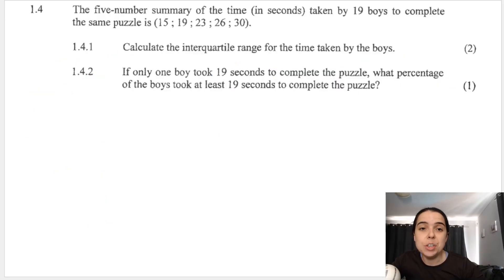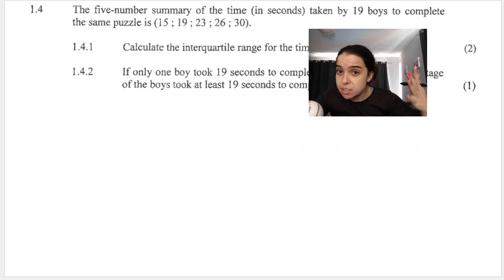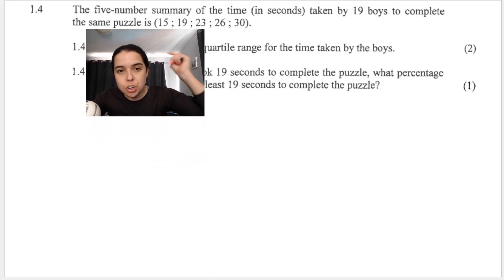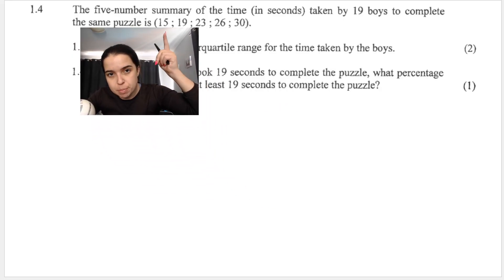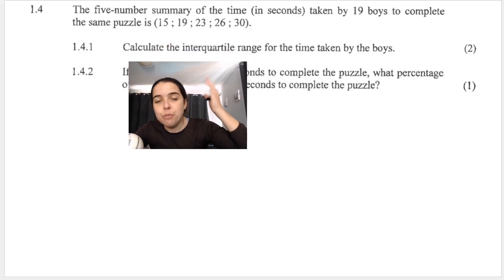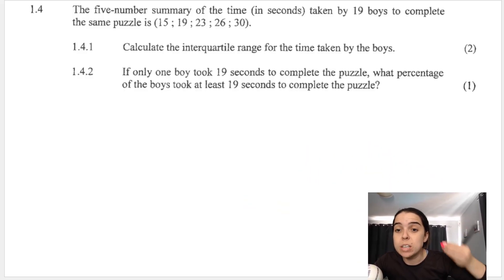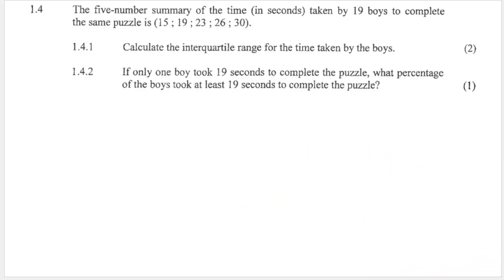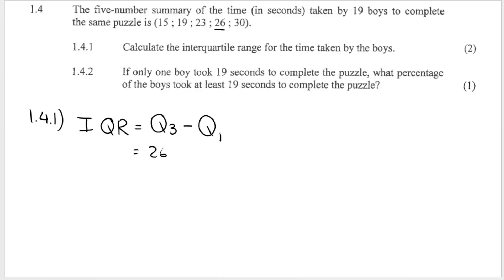The next question gives you the five-number summary of time in seconds taken by 19 boys to complete the same puzzle — minimum, Q1, Q2, Q3, and max. The first question asks: calculate the interquartile range. The interquartile range is Q3 minus Q1, which equals 7.